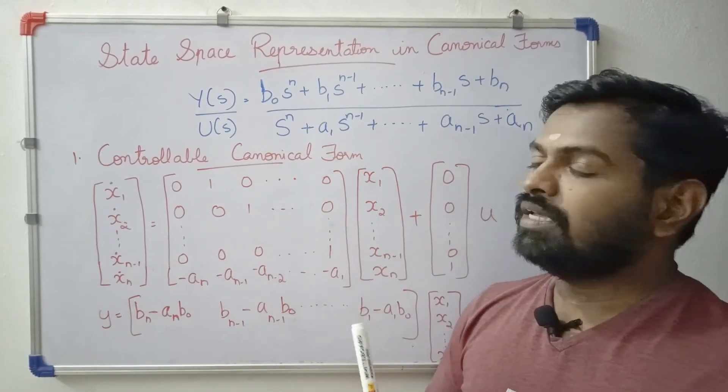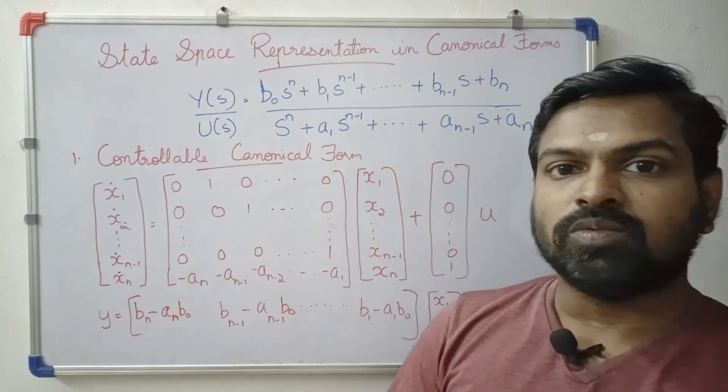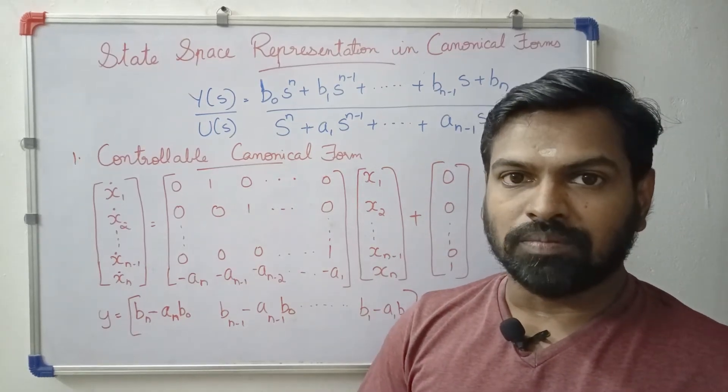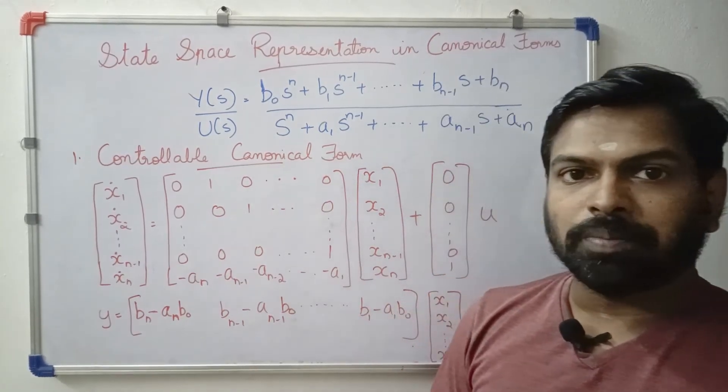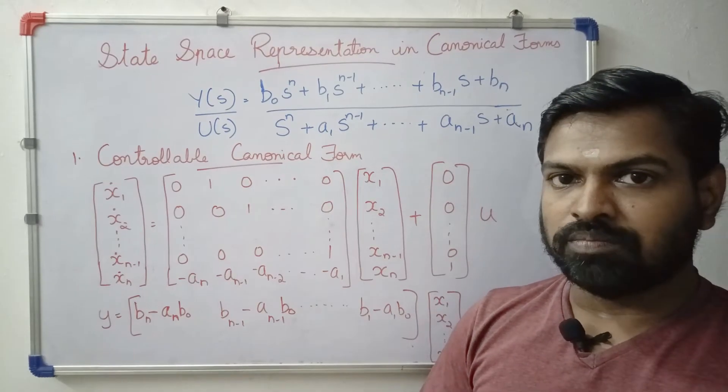We will solve this transfer function Y(s) by U(s) in the third method. At this time, in the last topic, controllable canonical form.